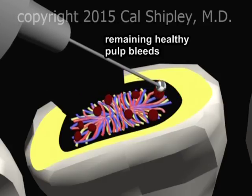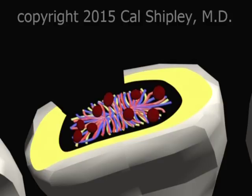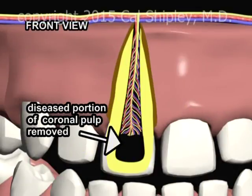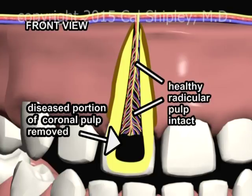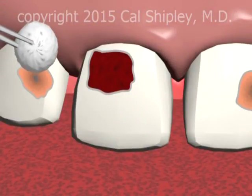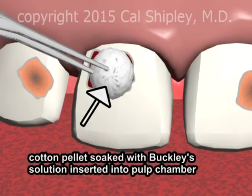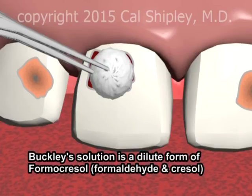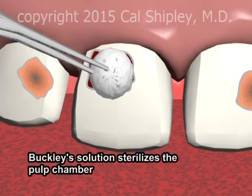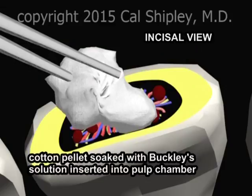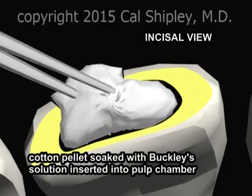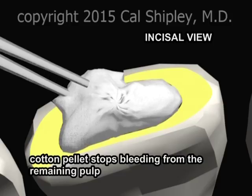This process results in some bleeding from the remaining healthy pulp. Switching to a frontal view in cross-section, the coronal diseased pulp has been removed, while the healthy radicular pulp remains. A cotton pellet soaked in Buckley solution is packed into the pulp chamber. Buckley solution is a dilute form of a compound known as formocresol, whose active ingredients are formaldehyde and cresol. The primary action of Buckley solution is to eliminate bacterial infection within the pulp chamber. Once inserted, the cotton pellet also acts to tamponade any bleeding which may be occurring from the remaining pulp.